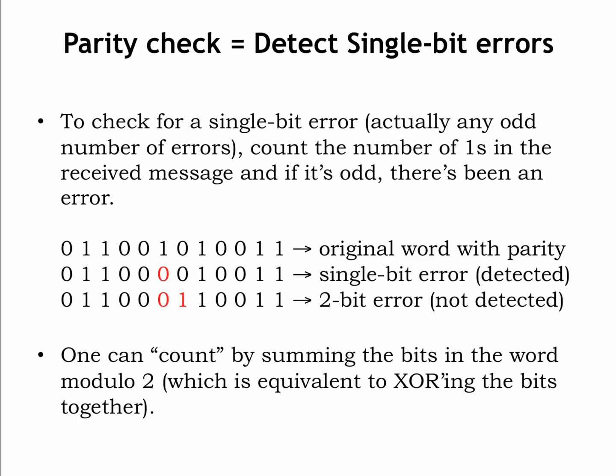It's easy to perform a parity check. Simply count the number of 1s in the codeword. If it's even, a single-bit error has not occurred. If it's odd, a single-bit error has occurred.